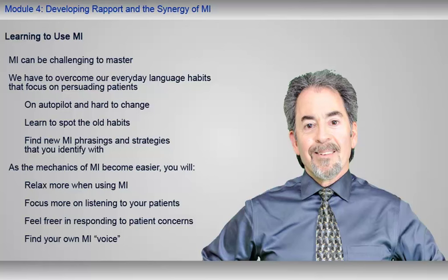In order to help you in this process, we're going to focus even more in the remaining modules on how MI works and the skills needed to make it work. As you become more acquainted with the range of possible MI responses, you will find a sense of freedom — often there is more than one correct way to respond to a patient with MI. As long as you listen to your patients, reflect back their sense-making, and address their issues, there is a range of possible ways to phrase an MI response. One very productive way to approach the remaining modules is to listen for MI responses and phrasings that you can hear yourself saying. When you find your own MI voice, MI will become so much more natural for you and more satisfying for both you and your patients.